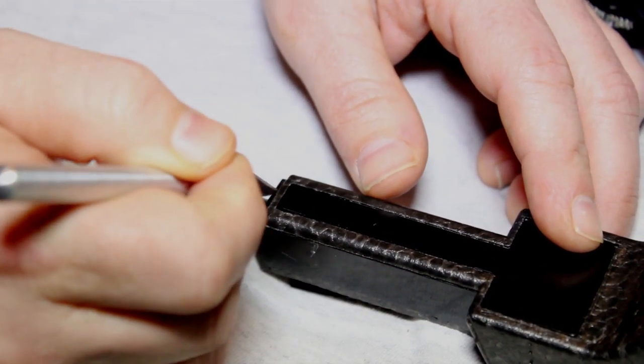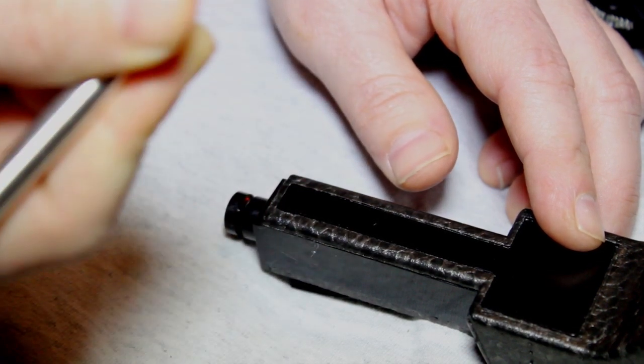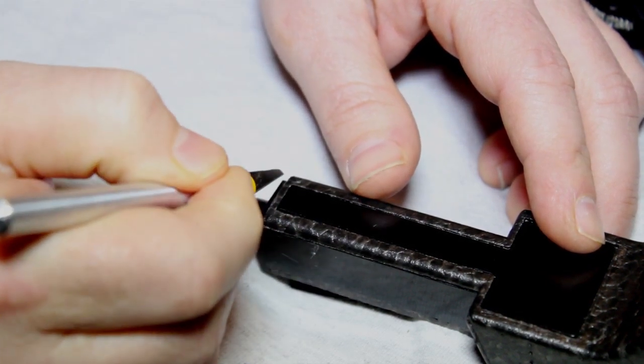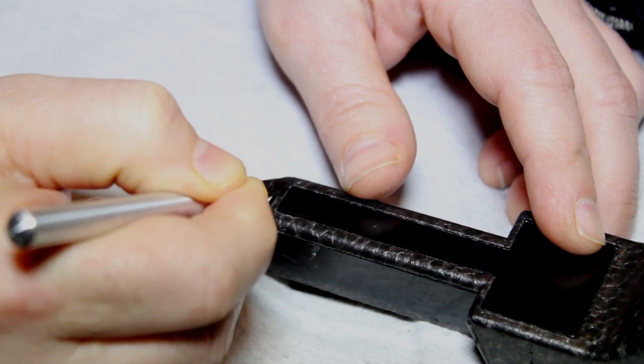So we're going to start with a hobby knife. I got a link in the description where you can get one of these for about five bucks as a whole kit. It comes with a bunch of different knives from Amazon, really handy to do all kinds of things with.